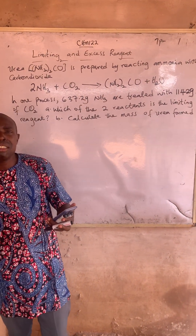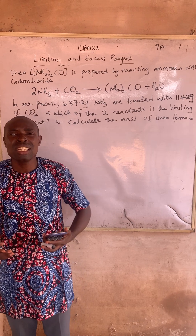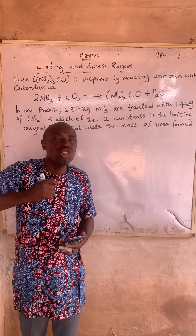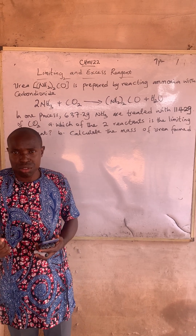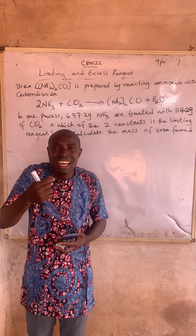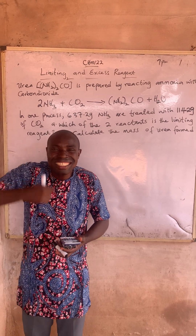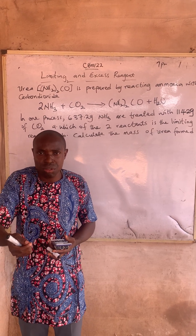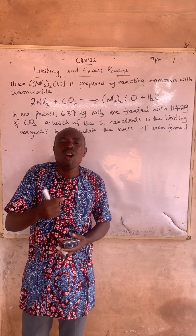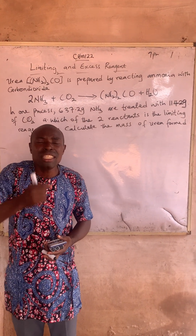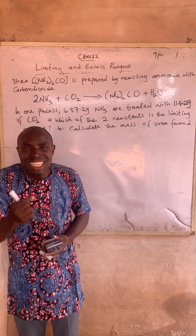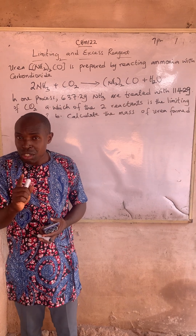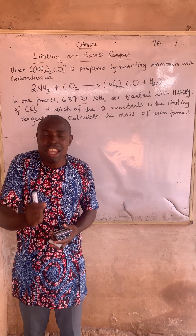Now, what is a limiting reagent and what also is an excess reagent? A limiting reagent refers to the reactants that are first used up in a reaction, while the excess reagents are also reactants that are in greater amounts than necessary in a given reaction. Take note: in the calculation of any of the products of a given chemical reaction, it is the limiting reagent that is used in getting the product. So that point should be in your head.